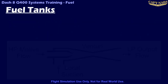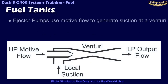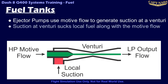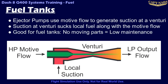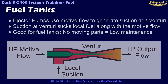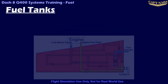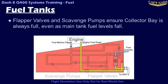The scavenge pumps are ejector pumps that are powered by high-pressure fuel returned from the engine fuel system. Ejector pumps use a source of high-speed, high-pressure fuel that creates suction within the pump, and sucks additional fuel along to the destination. Ejector pumps are used because they require practically no maintenance, as they have no moving parts. All of these valves and scavenge pumps exist to ensure the collector bay is full of fuel at all times, until the main tank is completely empty.